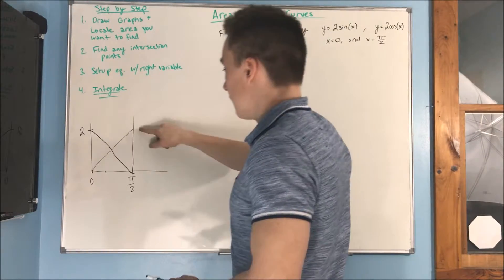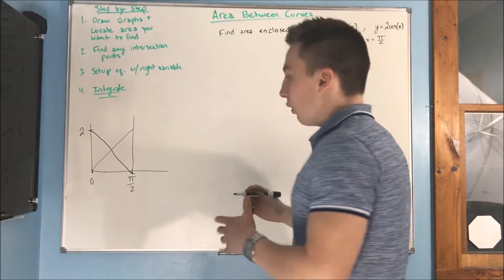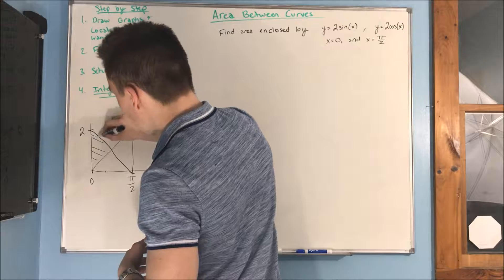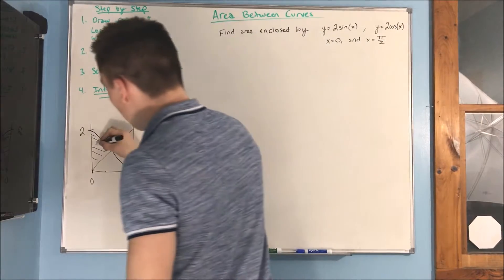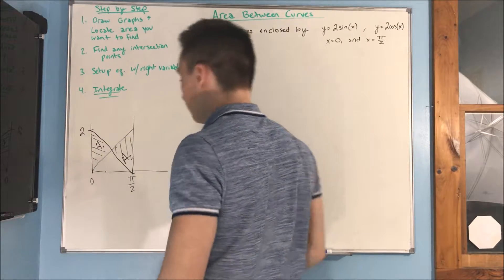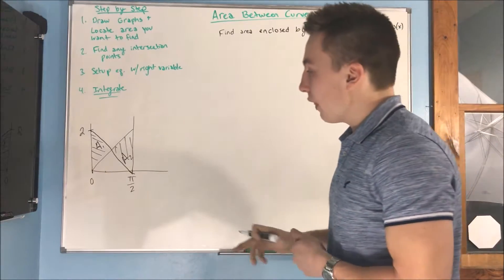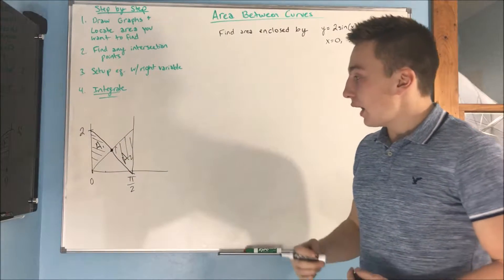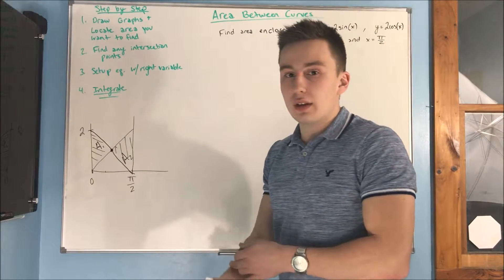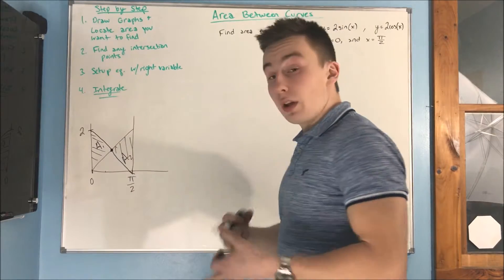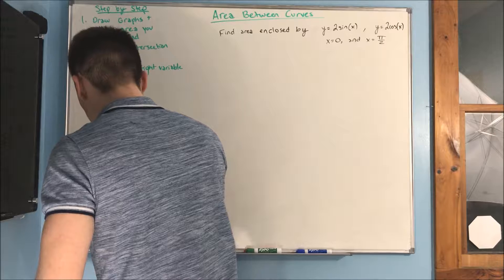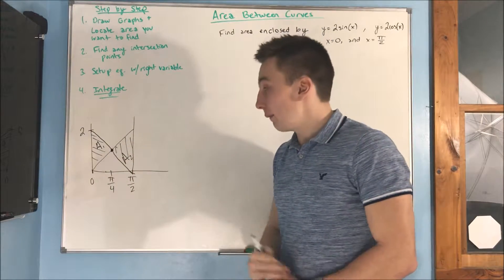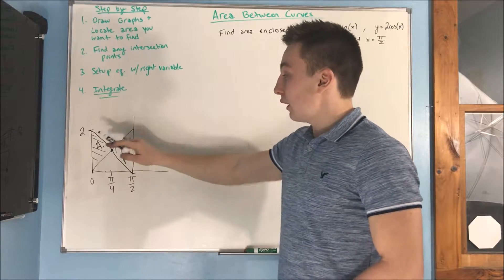We're trying to find the area bounded by these two curves between 0 and pi over 2 — this area here and this area here. We'll call them area 1 and area 2. We know we have one intersection point, and since we know our trig graphs, we don't need to do all the algebra — we know it's going to be at pi over 4, right in the middle. At pi over 4, our top graph switches: to start, our top graph is cosine, and then our top graph becomes sine.